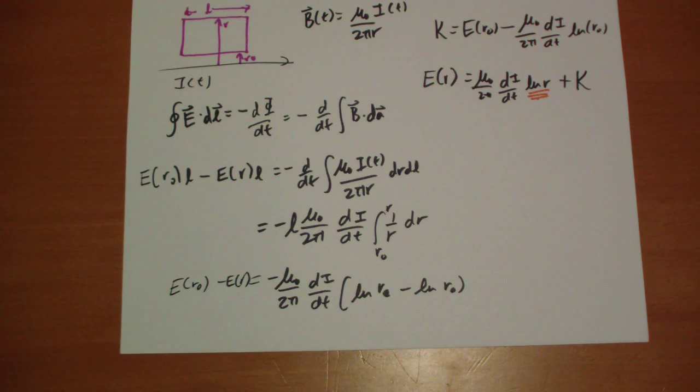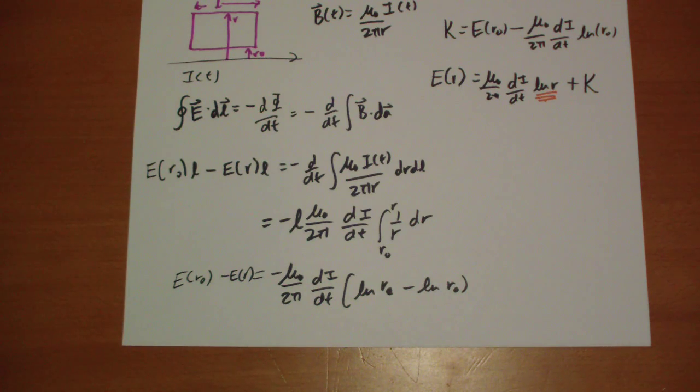The rule is, in this case, that the further you get from that wire, the longer it takes for news of changes in that current to reach you, because the news travels at the speed of light.